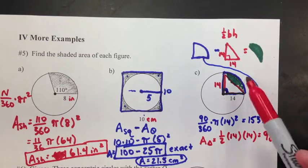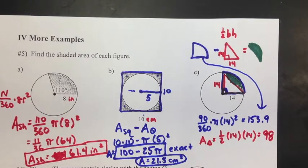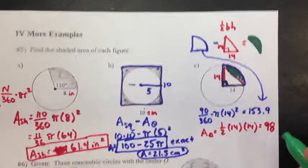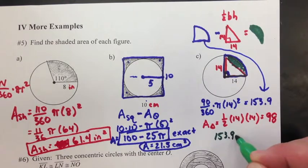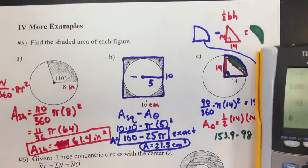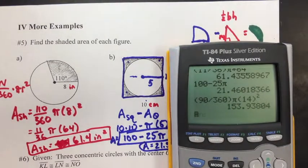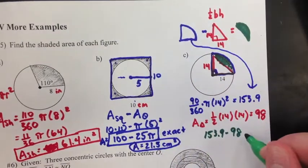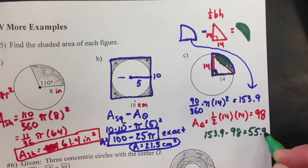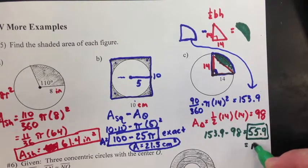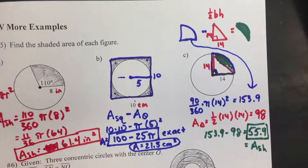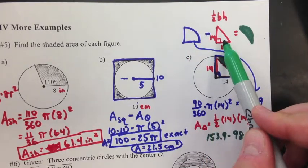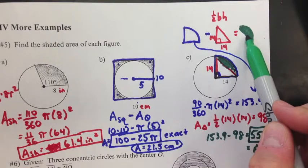So my last step here, I want just this green area. So I'm going to take the whole thing, which is the wedge. I'm going to subtract out the part I don't want, which is the triangle. So we'll do 153.9 minus 98 gives me 55.9. And that is my shaded area. So again, the concept, take the whole thing, subtract out what you don't want, take it out. Whatever's left over, that's your shaded area.